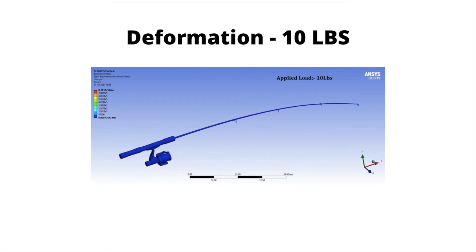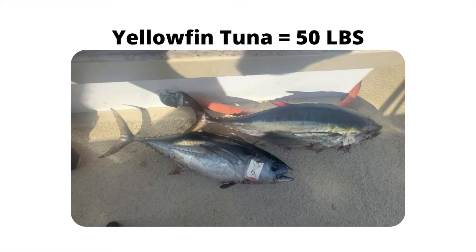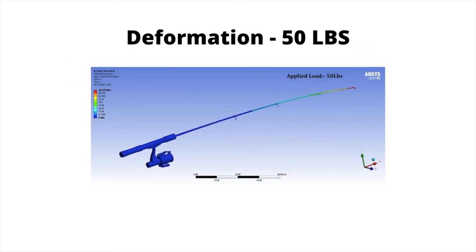Next, what if we catch a 50-pound tuna? So, tunas can get roughly 50 pounds. So, what does this do to the deformation? Here it is. As you can see, the red is a little bit bigger as well, but the deformation is significantly more.